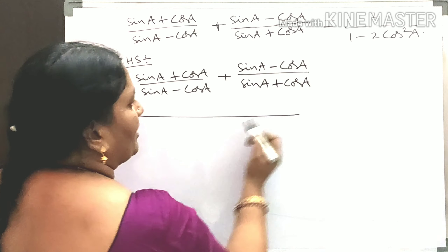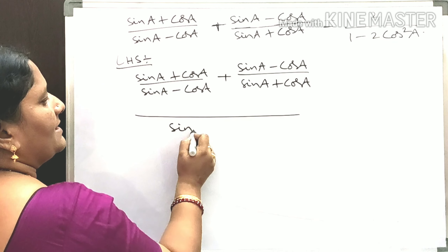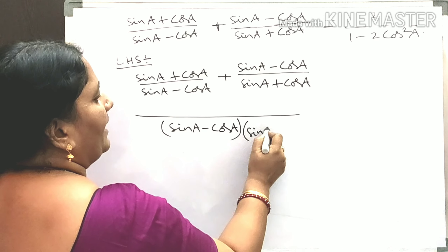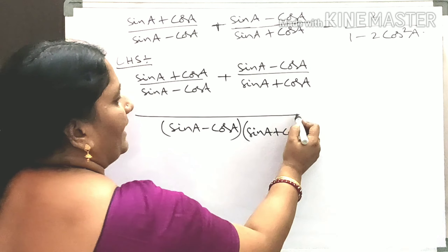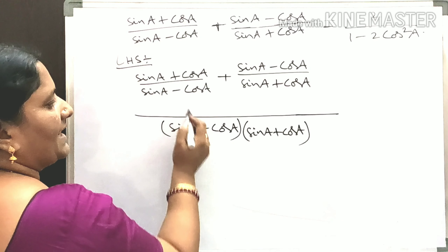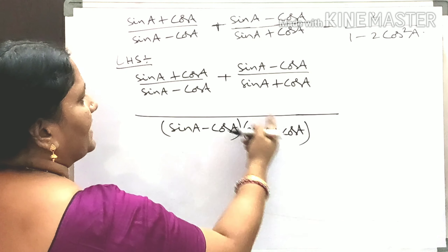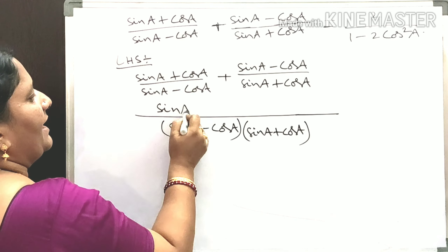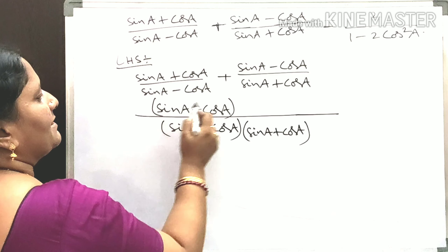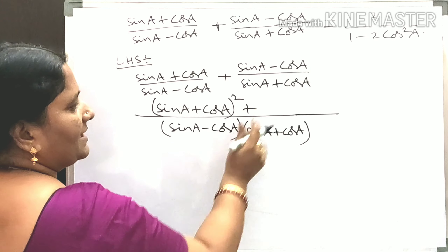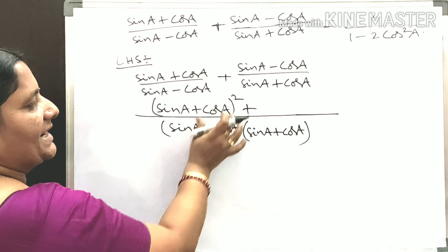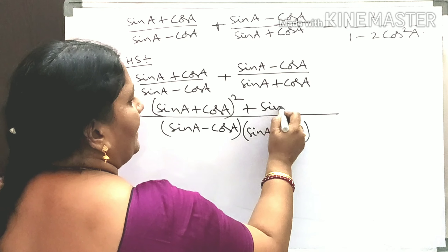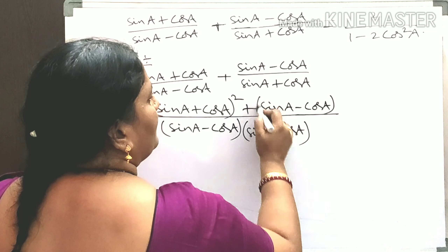The LCM is the product of the denominators: (sinA - cosA) into (sinA + cosA). Then sinA - cosA cancels, giving (sinA + cosA) into (sinA + cosA), which is (sinA + cosA) whole square. Plus, sinA + cosA cancels, giving (sinA - cosA) into (sinA - cosA), which is (sinA - cosA) whole square.